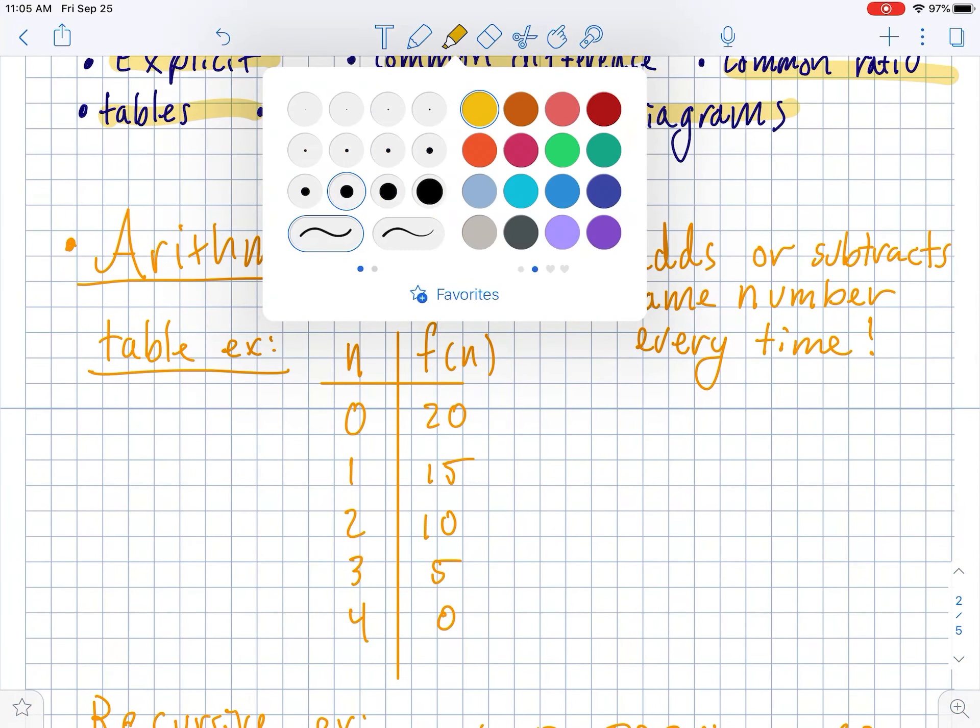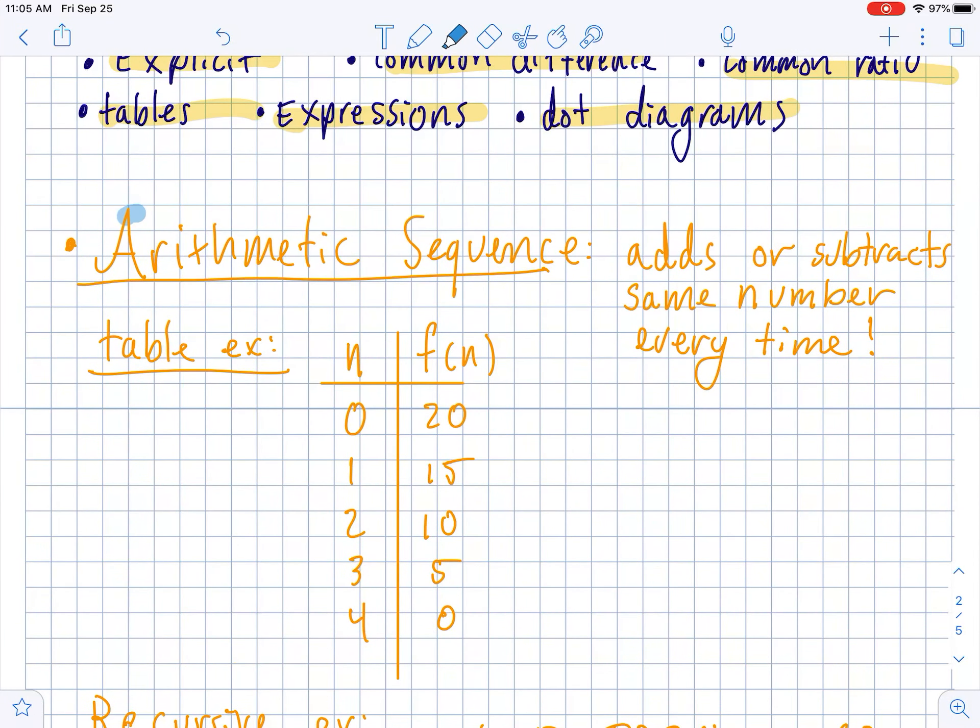The first thing that we're going to focus on is what an arithmetic sequence is. So an arithmetic sequence is just defined by how it's changing. So if it's adding or subtracting by the same number every single time, that makes a sequence arithmetic. So for instance, with this table right here, I have n's on the side, and then f of n's here.